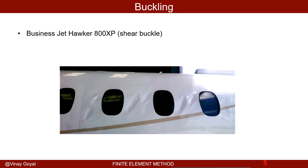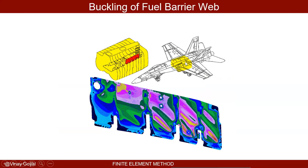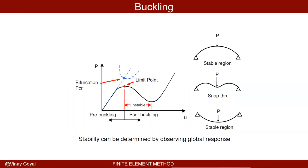Here you see an aircraft carrier where buckling tends to be quite critical in the center zone. Looking at buckling in terms of stability — we ask: is the buckling stable or not?